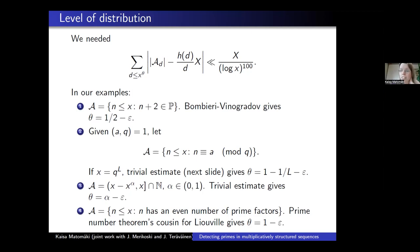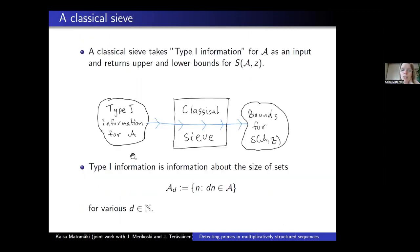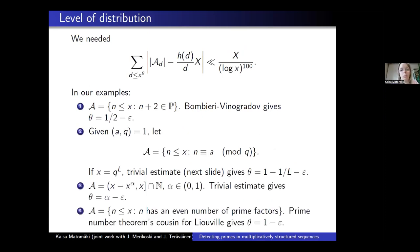This tells us something about the restrictions of trying to detect primes with classical sieve methods: even if we have very good type 1 information, it might be that there are no primes. This is why example four is important.